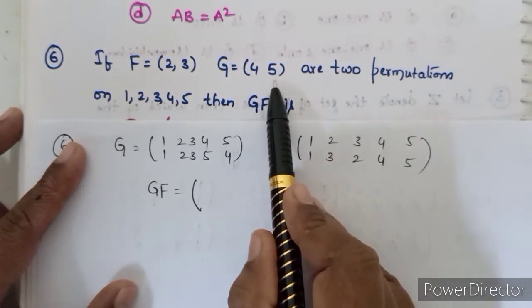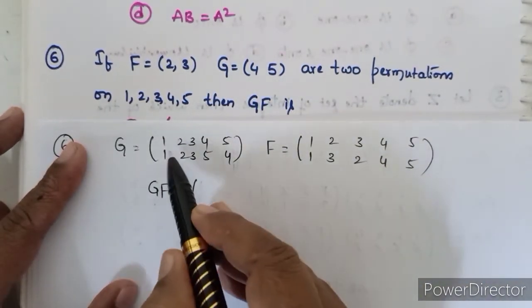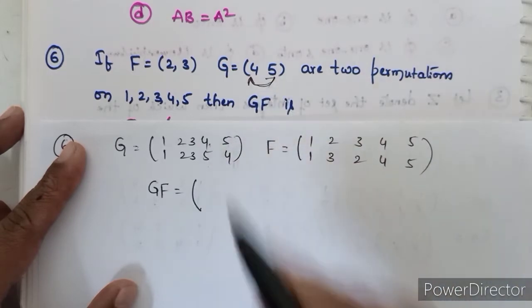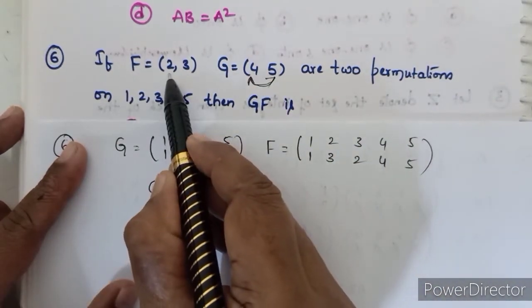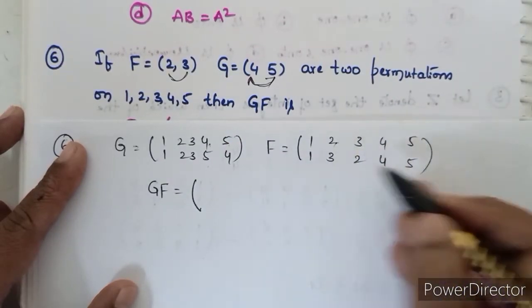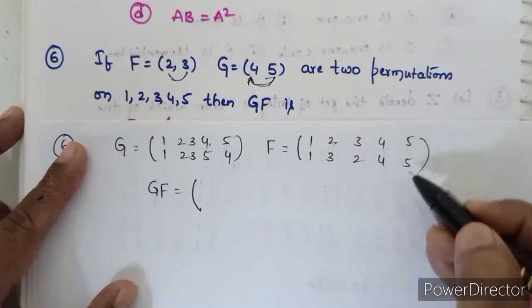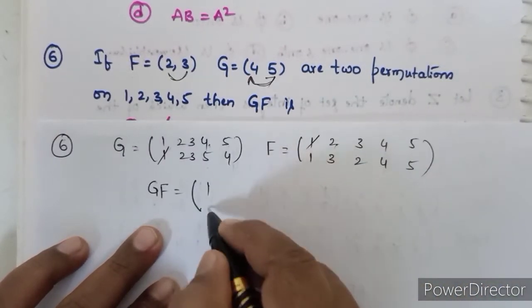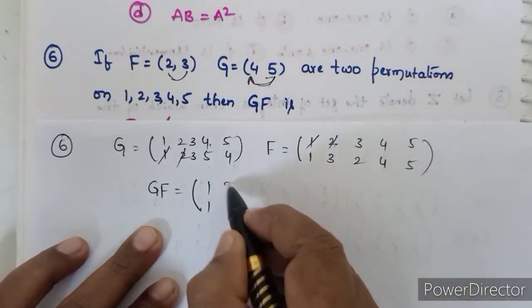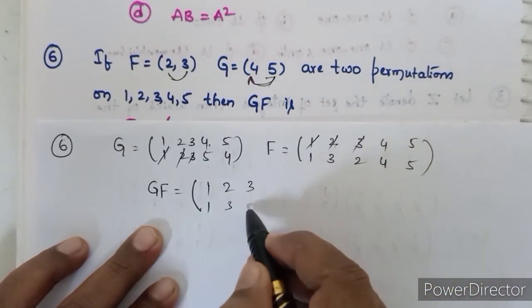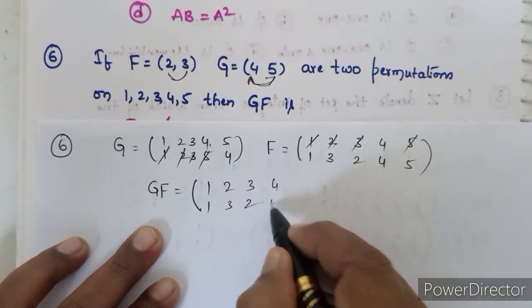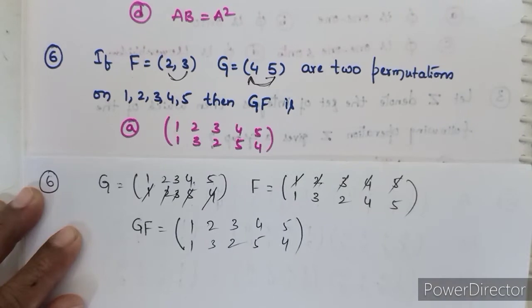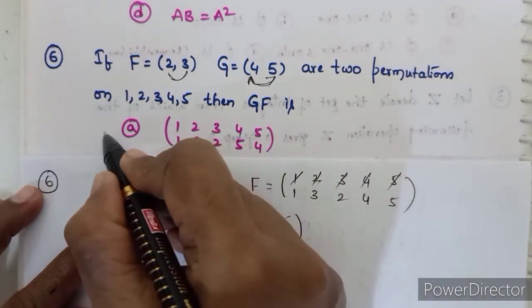Computing GF: 1→1→1, so 1→1. 2→3→3, so 2→3. 3→2→2, so 3→2. 4→5→5, so 4→5. 5→4→4, so 5→4. Therefore GF = (1 1)(2 3)(3 2)(4 5)(5 4), which matches option A. Option A is correct.